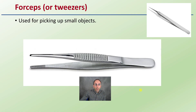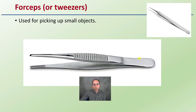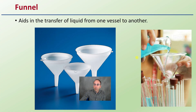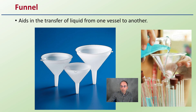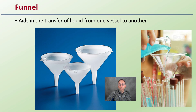Forceps are tweezers used for picking up small objects. They can be used to hold things in a flame potentially, and are great for detailed work. They're metal, so they handle quite a bit of repetitive motion without a high chance of breaking. The funnel aids in the transfer of liquids from one vessel to another — no surprise there. They come in different sizes to match the containers you're dealing with.